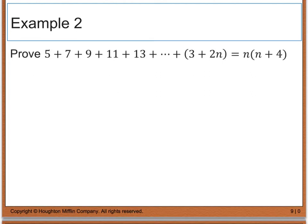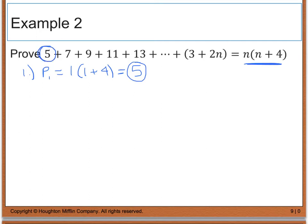For example 2, we want to prove that the sum 5 plus 7 plus 9 plus 11 plus 13 plus 3 plus 2n equals n times the quantity of n plus 4, using the principle of mathematical induction. We start with step 1: prove that p sub 1 is true. Plugging 1 in for every n on the right side gives 1 times 1 plus 4, and 1 plus 4 is 5 times 1, which equals 5. Verifying that p sub 1 on the left side also gives 5 — it works. So step 1 has been proven.